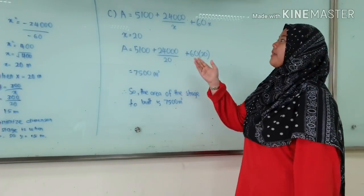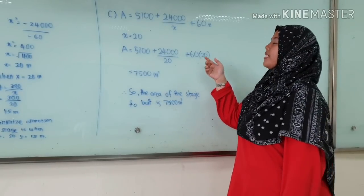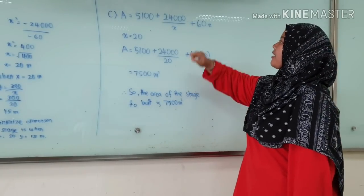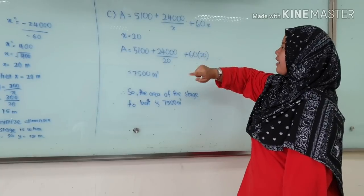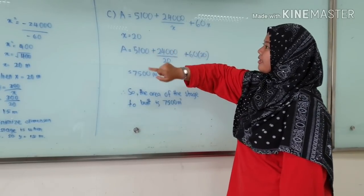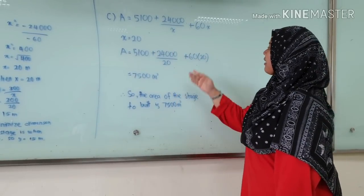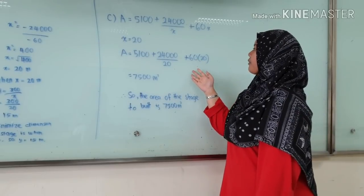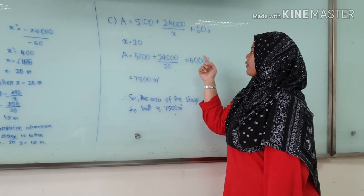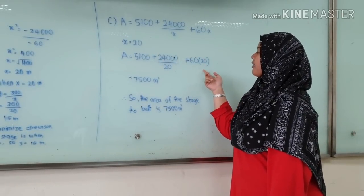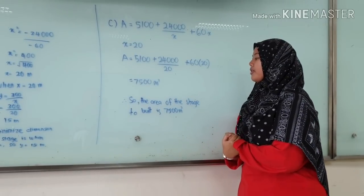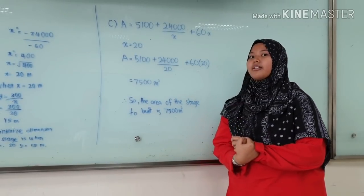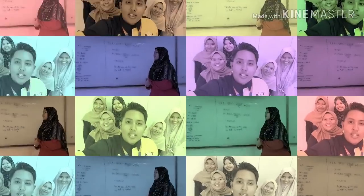I want to explain the solution for question C. This question can be derived from question A, and X can be found from question B. We substitute the X value into the equation and the minimum combined area of the stage is 7,500 square meters. That is all from our group. Thank you!